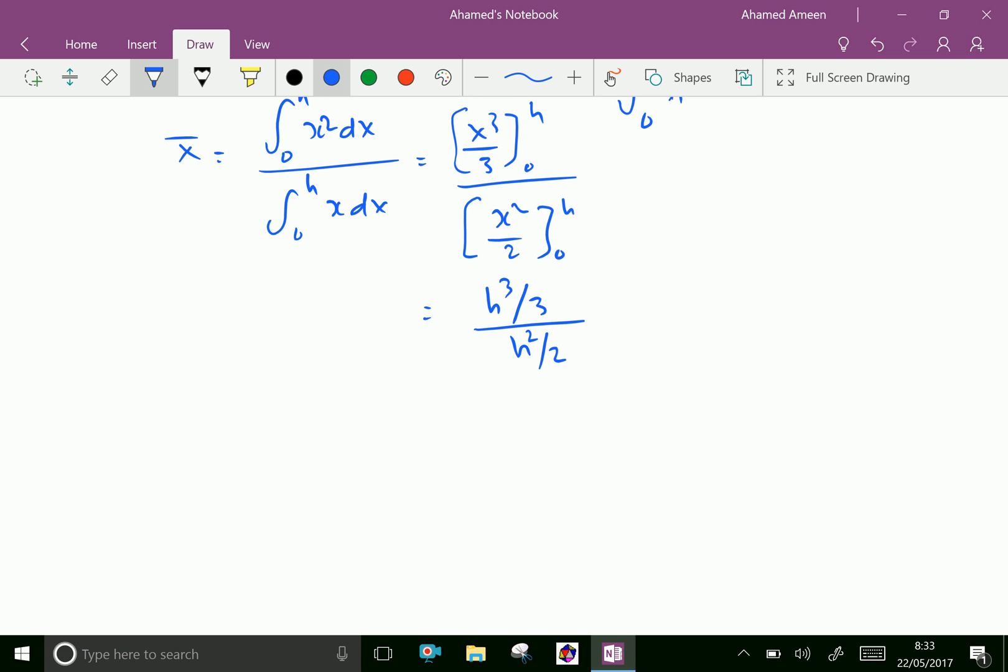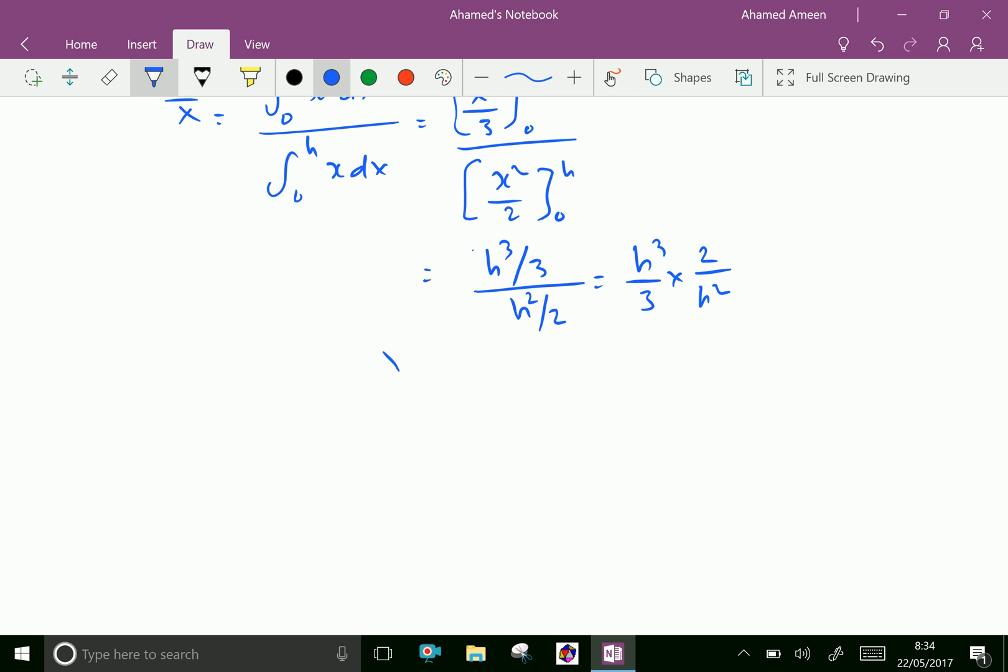This equals h³/3 times 2/h². When h² cancels, h remains, giving us 2h/3.